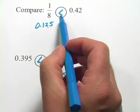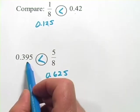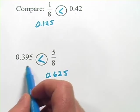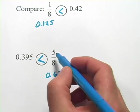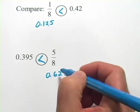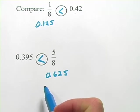And if you look at this one, we have 0.395. That's less than one half. It's less than 0.5. Five eighths is greater than one half because four eighths would be one half. So you probably could have gotten this one without breaking out your calculator either.